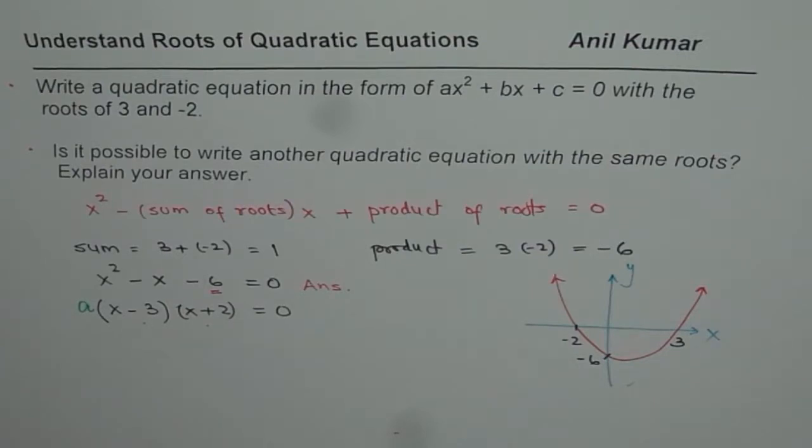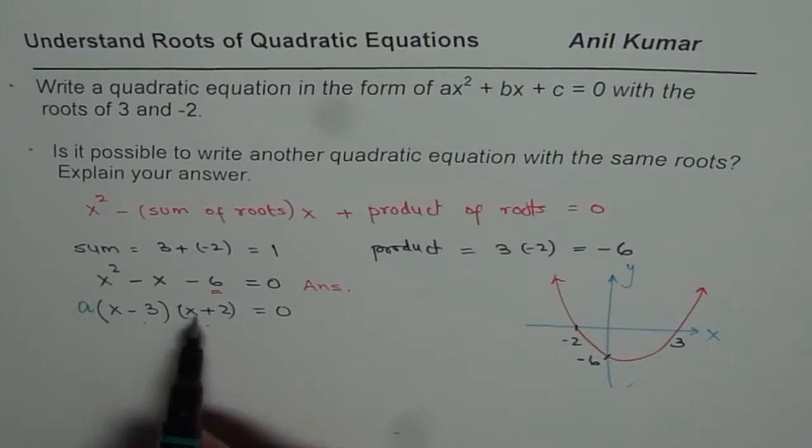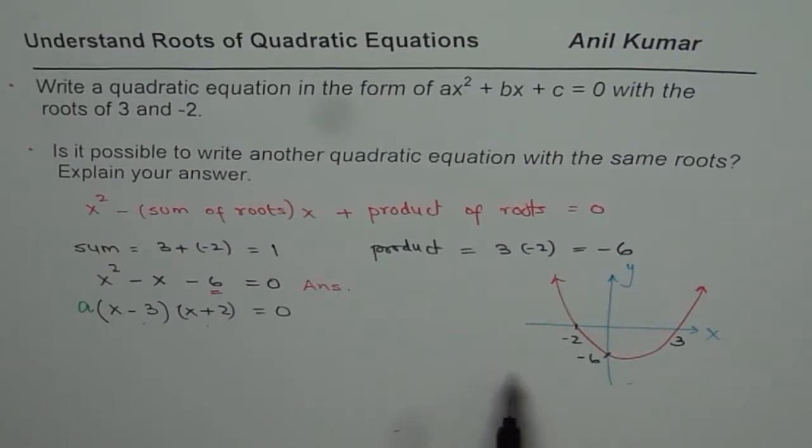Now A could be negative also. So multiplying by the same term, so if I write equation A times all this, then also we get the same roots. So that's the whole idea.